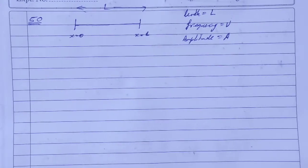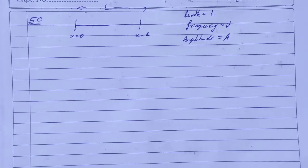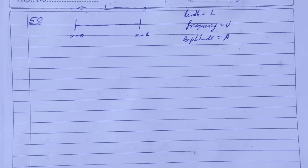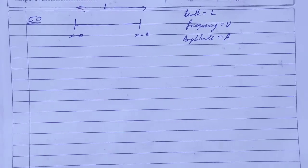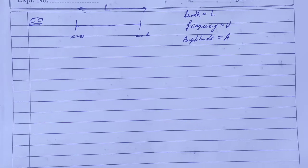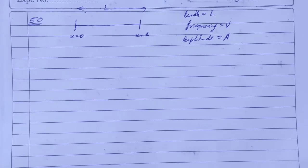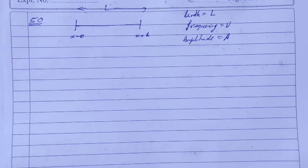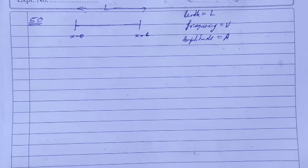HC Verma Solution Chapter 15 Wave Motion and Wave on String, Question 50. A string of length L, fixed at both ends, vibrates in its fundamental mode at a frequency nu and a maximum amplitude A. Find the wavelength and the wave number.